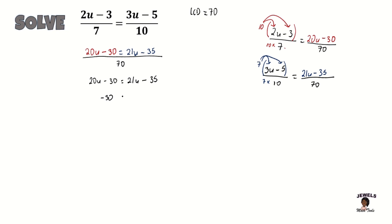So on my left-hand side I would be left with my negative 30, and I'll now have 21u minus 20u minus my 35. Putting back my negative 30.